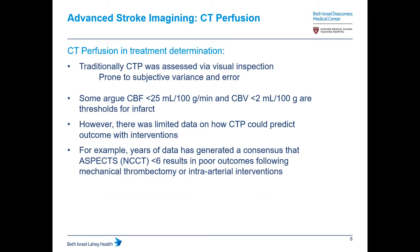Some tried to use more quantitative data: CBF less than 25 mL per 100 grams per minute, or CBV less than 2 mL per 100 grams as thresholds. But there was really limited data on how CTP could predict outcomes with intervention — how big the ischemic penumbra needed to be, or whether there was an infarct core size too large for good outcomes. For years, people used non-contrast head CT ASPECTS scores to predict outcome, and we knew anything less than 6 usually resulted in poor outcomes following mechanical thrombectomy.